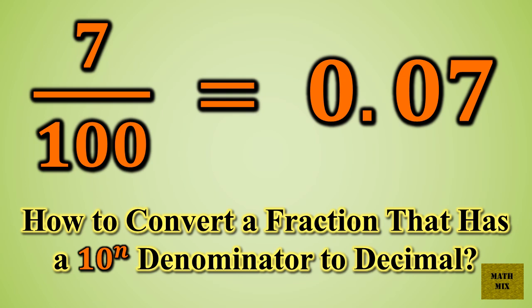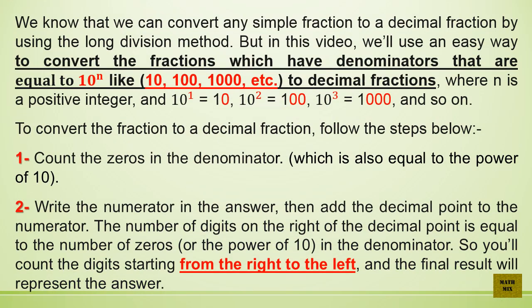How to convert a fraction that has a 10 to the power of n denominator to decimal. We can convert any simple fraction to a decimal fraction using the long division method. But in this video, we'll use an easy way to convert fractions which have denominators equal to 10 to the power of n — like 10, 100, 1000, etc. — to decimal fractions, where n is a positive integer. So 10¹ = 10, 10² = 100, 10³ = 1000, and so on.